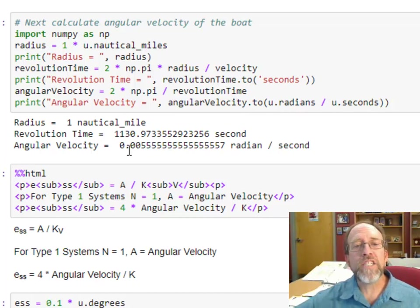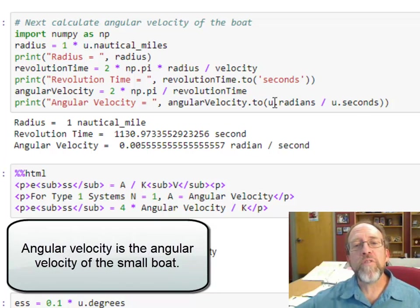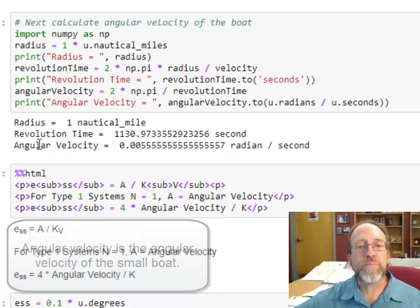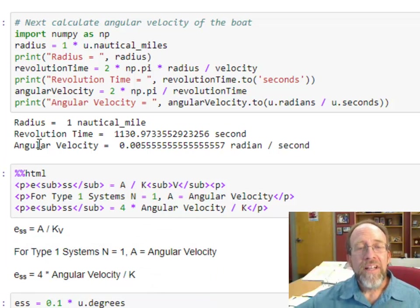I can set up the revolution time to be in seconds. Now I've got the revolution time. That's how long it takes for the small boat to go around the big boat. I can convert that into an angular velocity of velocity in radians per second, because that's just 2 pi over the revolution time. That angular velocity is 0.0055 radians per second. Because I can actually now, using the fact that this has units, I've got the ability to convert it to radians per second. All that with units.